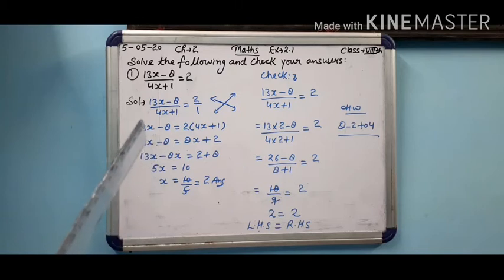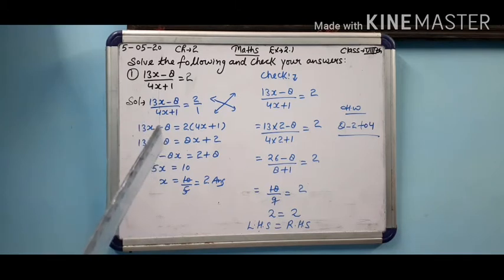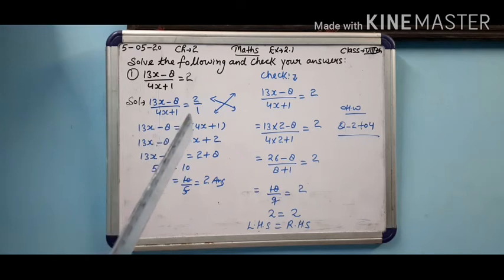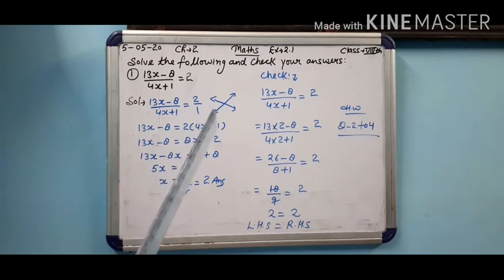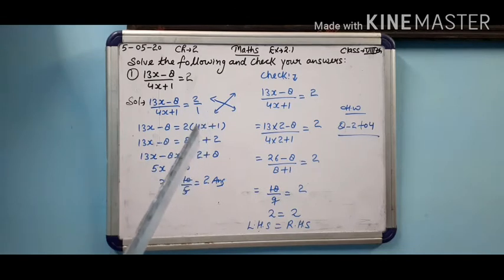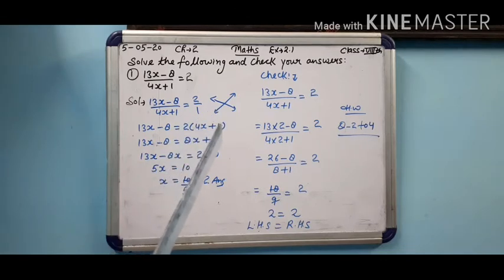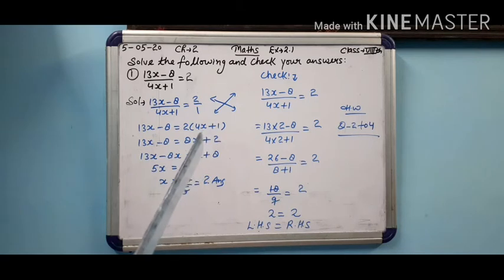Isके baad 13x minus 8 aise hi utar denge, is equal to, 2 ki multiply 4 se karenge — 2×4=8, aur x aise utar denge. Phir plus ka nishan hai, plus aa jaayega. 2 ki multiply 1 se karenge — 2×1=2.